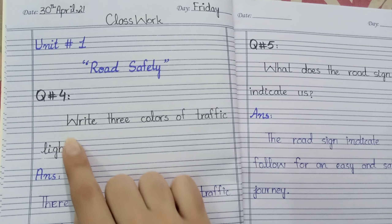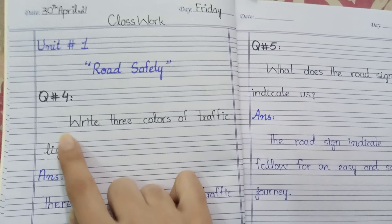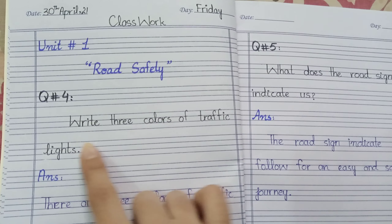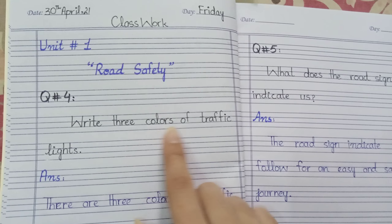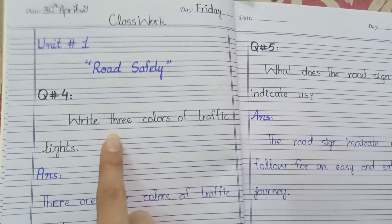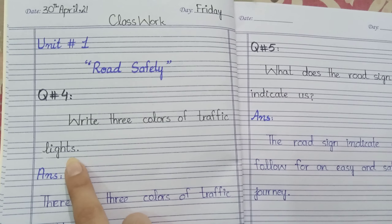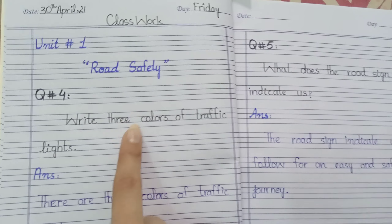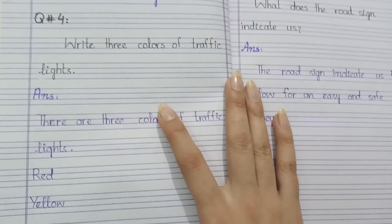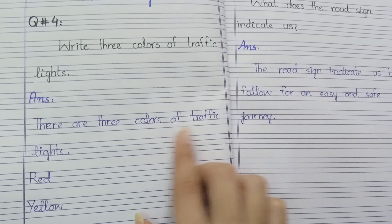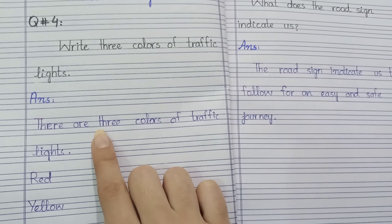Today we will do question number 4 and 5. Question number 4 is: write 3 colors of traffic lights. How many colors will we write? 3. Answer: There are 3 colors of traffic lights.